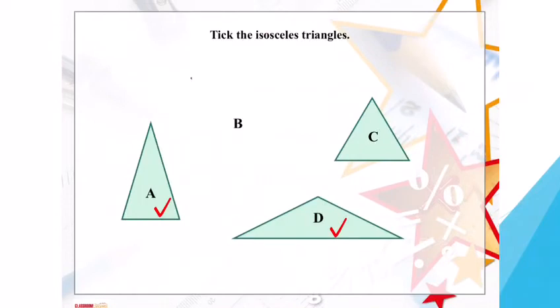As you can see, A and D are the isosceles triangles because both of them share two sides of equal length, despite looking slightly different. The key thing is they both have two equal sides.